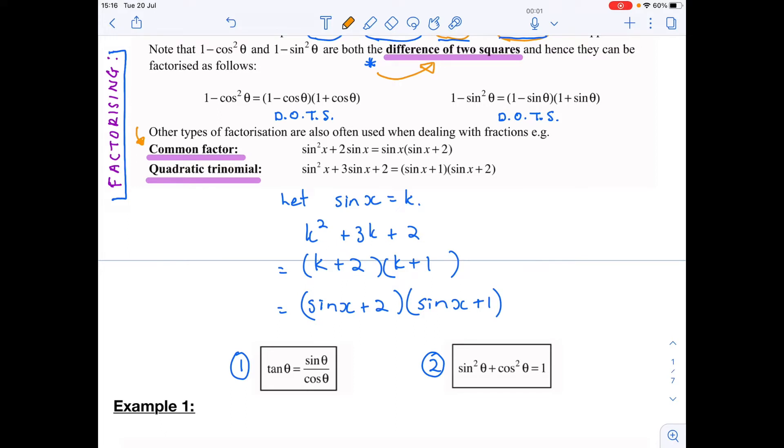Let's look at an example. If you had sine squared x plus two sine x, you can see clearly that sine x is common. If we take it out as a common factor, we're left with sine x plus two.